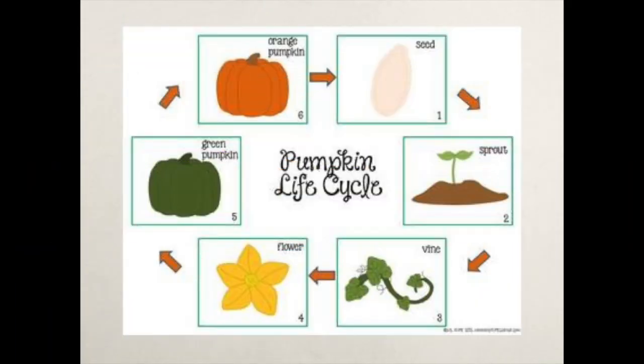So let's review our pumpkin life cycle. We start with stage one, the seed, which grows into a sprout — a young plant — which gets even stronger and longer into a vine with large leaves. We start to see yellow flowers that get pollinated and a small green pumpkin forms, which grows in sunshine into a large orange pumpkin.